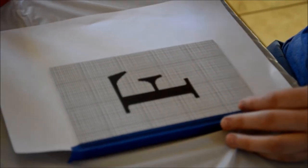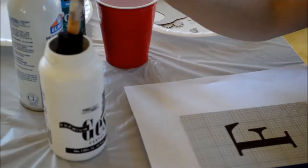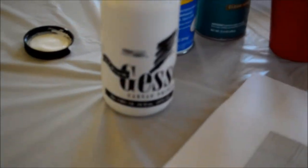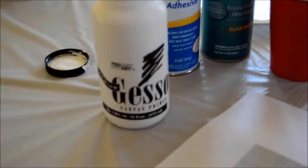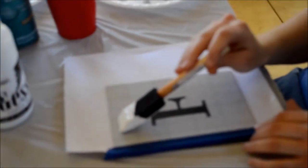And then first of all you're gonna take gesso paint and we're gonna do about five coats so it doesn't have to be very thick when you first start. Just do long strokes and do it as thin as possible.